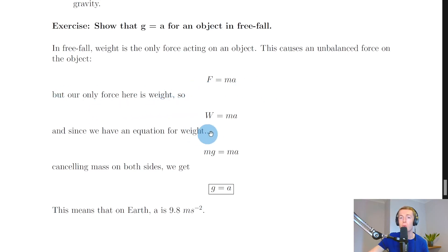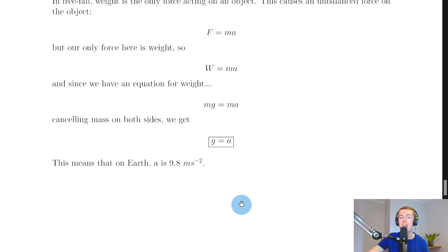But we've said that our only force here is weight, so we can say that W equals ma instead, just replacing the unbalanced force with our weight. Since we already know an equation for weight, W equals mg, we can replace this W with mg. So we get mg equals ma. Now you'll notice we have mass on both sides here, so we can actually just cancel those on both sides to get g equals a.